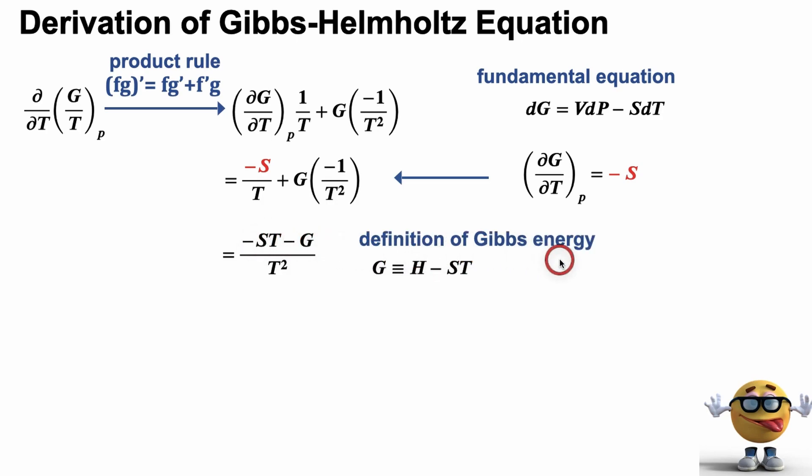We're going to simplify this numerator. And to do that, we're going to use the definition of Gibbs energy. And Gibbs energy G is defined as the enthalpy minus the entropy times the temperature. And the reason Gibbs energy is defined this way is that the change in Gibbs energy becomes a marker for spontaneity at constant pressure and constant temperature. I've kind of gone off the rails with other videos about this, so you can check that out if you like.